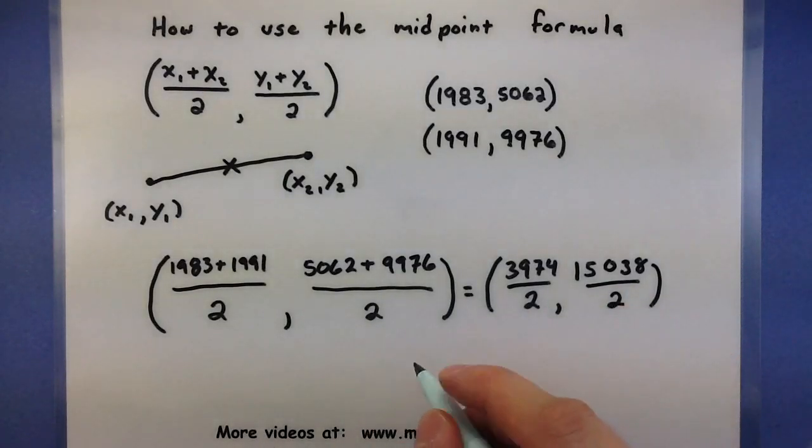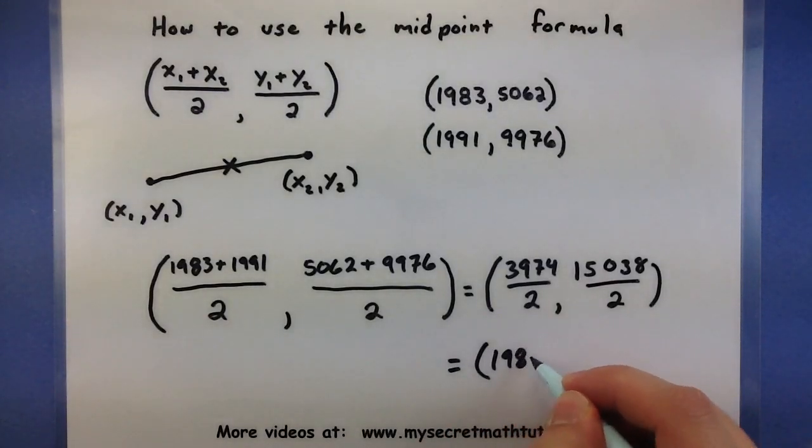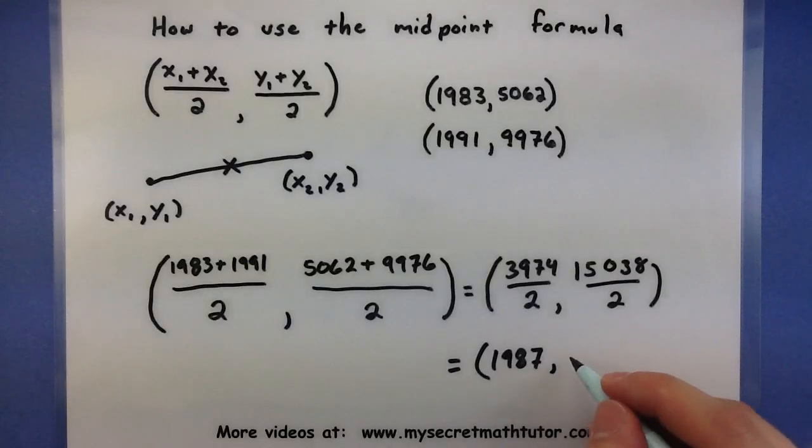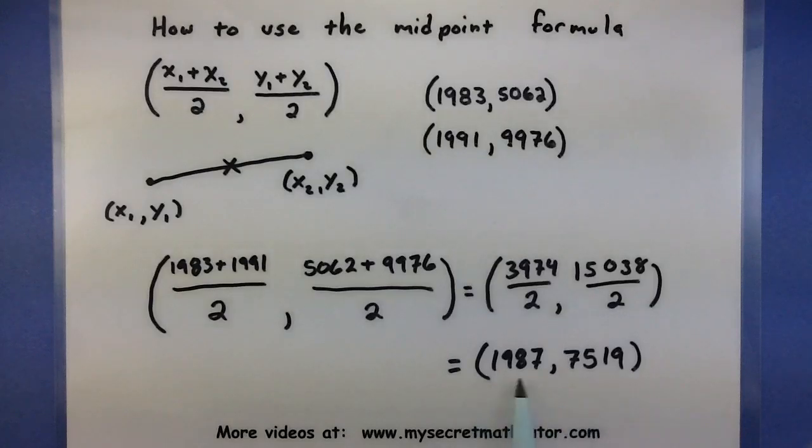So, dividing each of those by 2, we finally arrive at our midpoint: 1987 and 7519. So, this new point represents the midpoint or the halfway point between these original two.